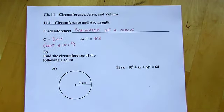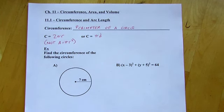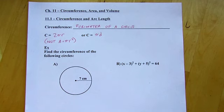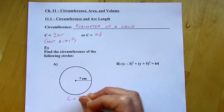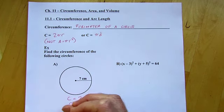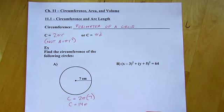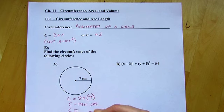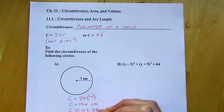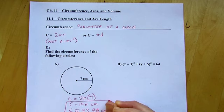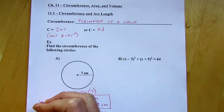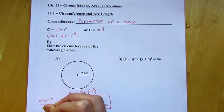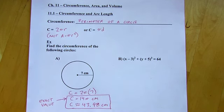Let's start by finding the circumference of two circles. The first one has a radius of 7 centimeters. So using 2πr with r = 7, that gives us 14π. You could leave it in terms of π, or do a decimal approximation: about 43.98 centimeters. If you're asked for the exact value, give it in terms of π, because the decimal is rounded.